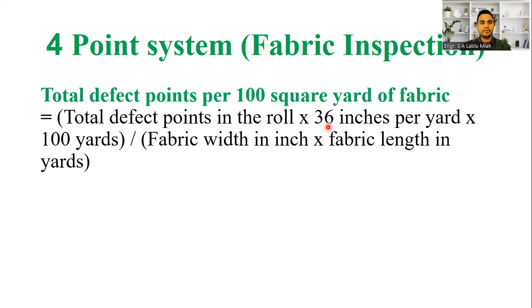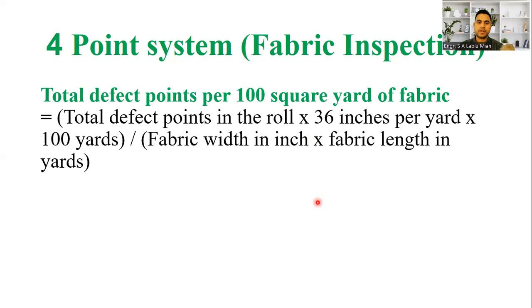The formula compares the defect points in the roll. For example, using roll measurements of 16, then 18, then 65, then 64 yards, we calculate accordingly.